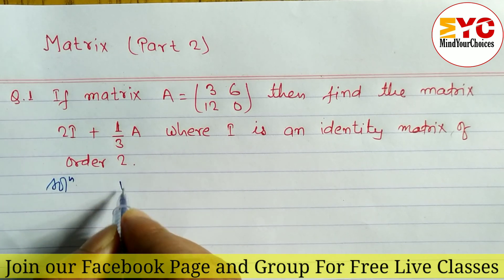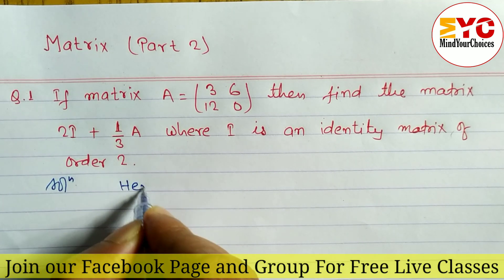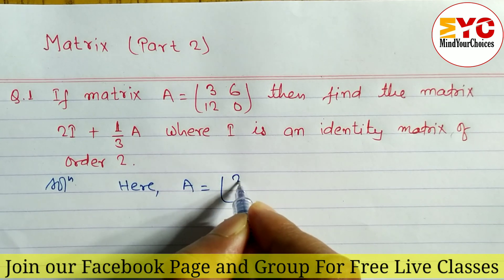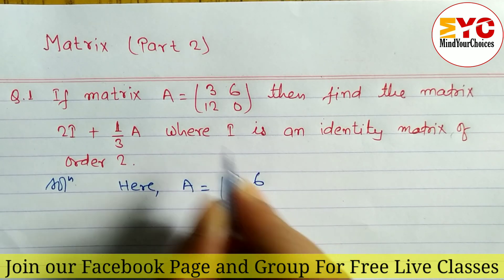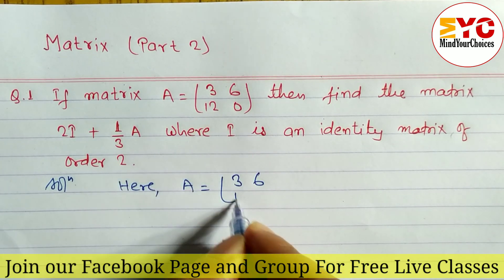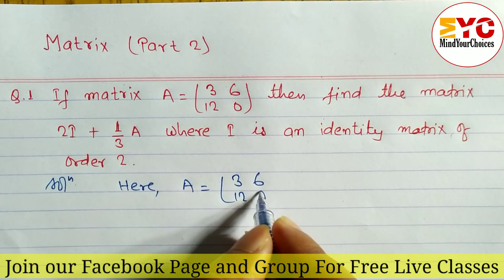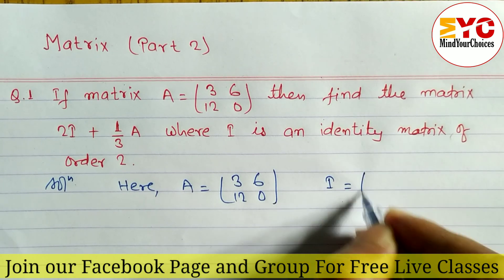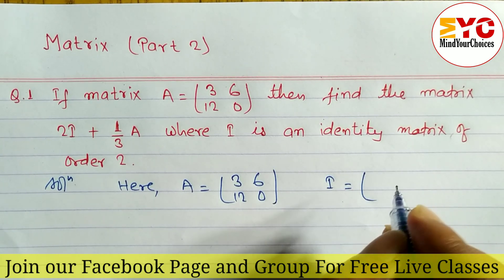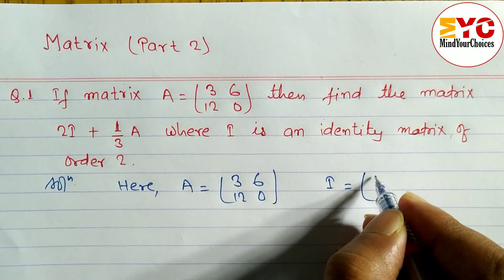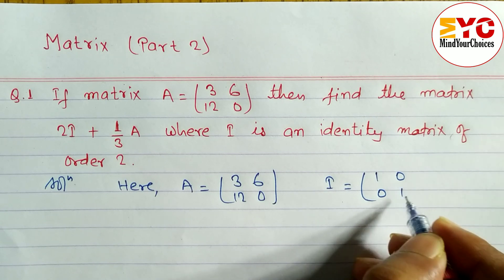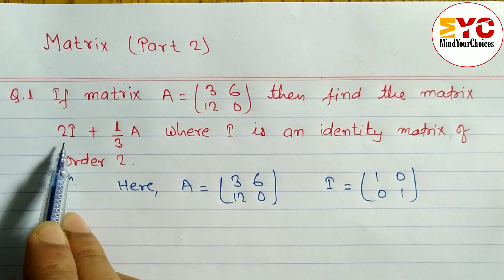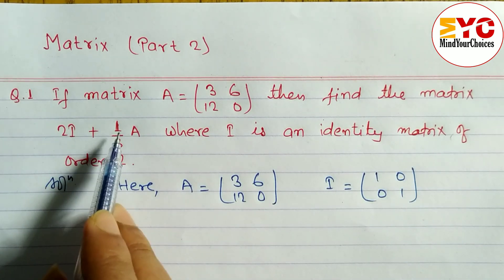Solution: matrix A is given as [[3, 6], [12, 0]]. The identity matrix I of order 2 is [[1, 0], [0, 1]]. Now we have to find 2I + (1/3)A.